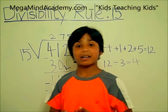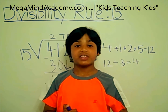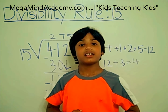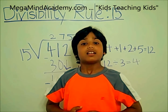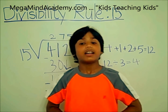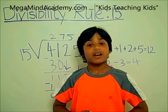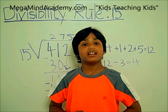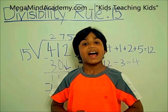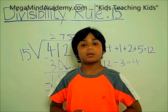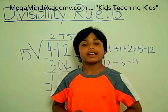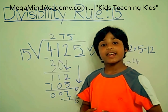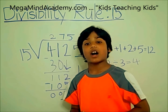Today we learned about divisibility rules — the rule of 15. In order to find if a number is divisible by 15, the number has to be divisible by 5 and 3. Thank you for watching.